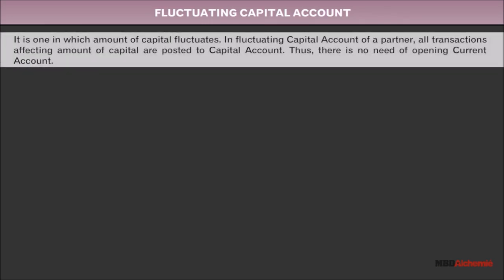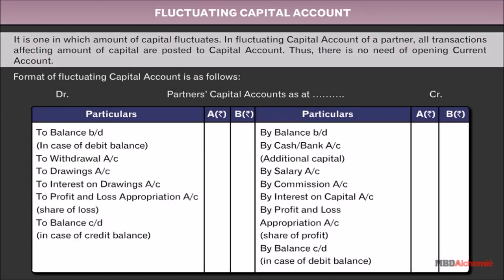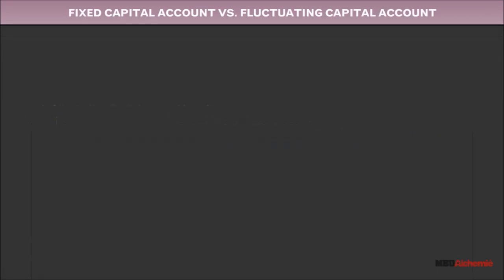Fluctuating capital account is one in which the amount of capital fluctuates. In the fluctuating capital account of a partner, all transactions affecting the amount of capital are posted to the capital account. Thus, there is no need of opening a current account. The format of the fluctuating capital account is as follows, along with the difference between fixed capital account and fluctuating capital account.